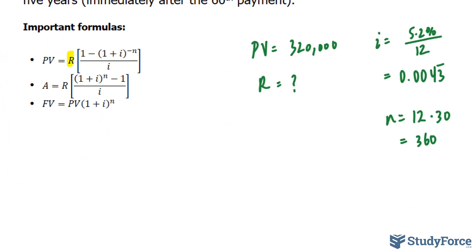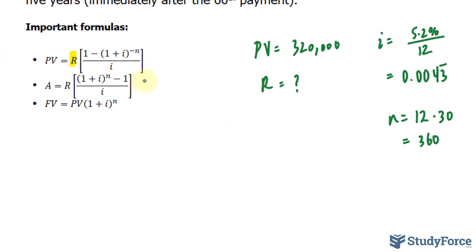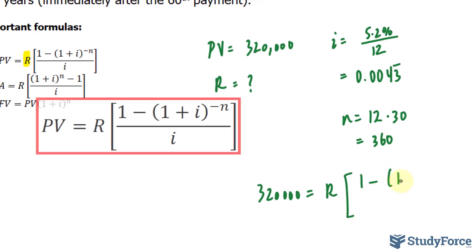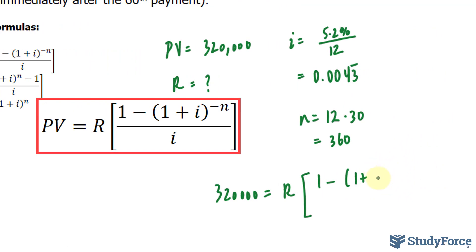So now we have everything we need to substitute into this formula and solve for R. So our present value is 320,000 is equal to R. That's our unknown. And within the brackets, we have 1 minus 1 plus our interest rate of 0.0043 repeating, raised to the power of negative 360 over 0.0043 repeating.